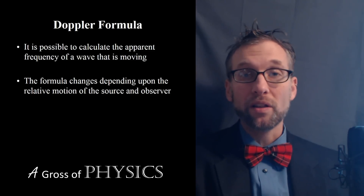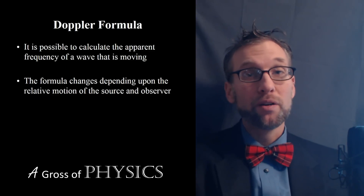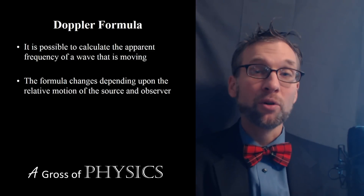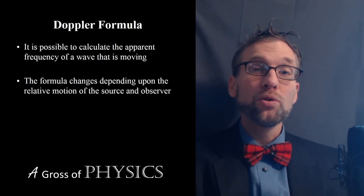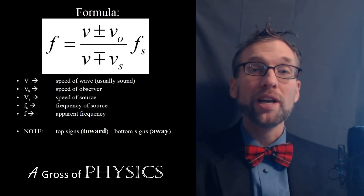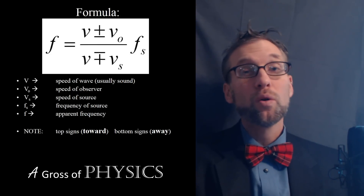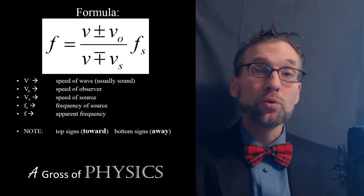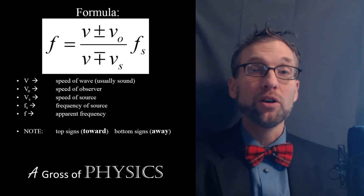Objects moving towards one another have an apparent frequency that goes up; objects moving away have an apparent frequency that goes down. The Doppler equation has a number of terms and looks quite cumbersome at first. You'll notice there are two signs for each term in the fraction — the numerator and denominator each have a positive and negative sign. This avoids writing two separate equations. If objects move toward one another, use the top sign; if they move away, use the bottom sign.